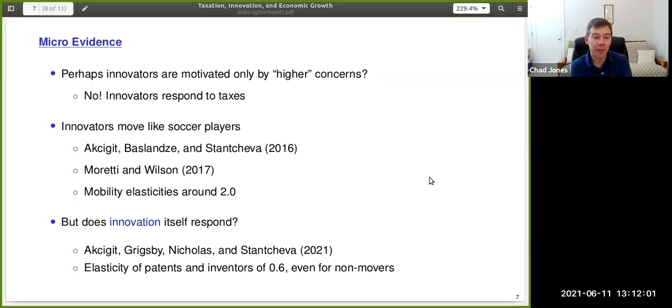One set of papers is this evidence on geographic mobility. And this evidence suggests that innovators move like soccer players. If taxes rise in one place, with a pretty high elasticity around two to the keep rate to one minus tau, you see innovators moving.